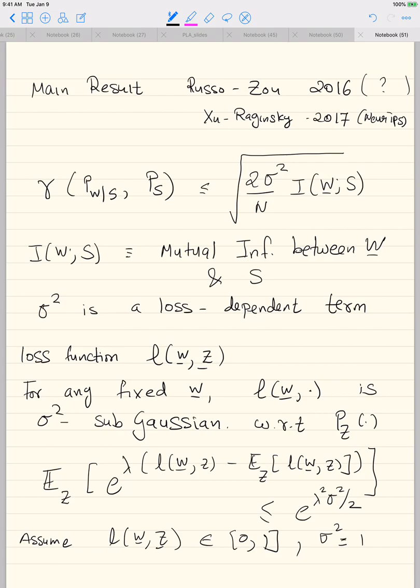λ here is just a real number and this holds for any λ. We are taking this random variable, subtracting its mean, and looking at its moment generating function, which is bounded by exp(λ²σ²/2). If you don't like these definitions, they are not critical — just assume L(W, Z) ∈ [0, 1] and σ² = 1. The results are stated in this more general fashion for completeness.